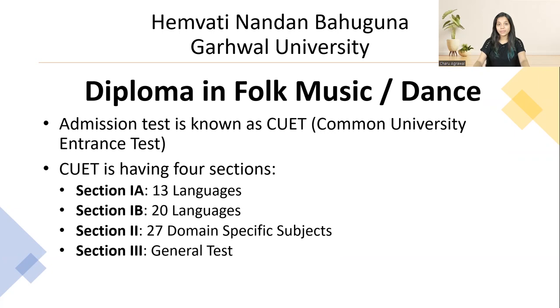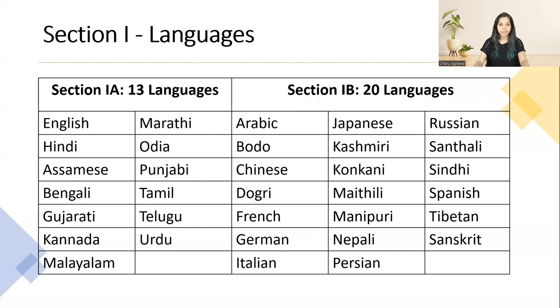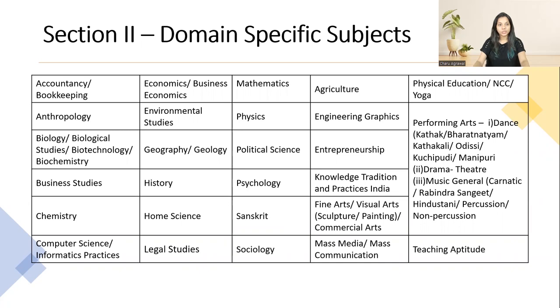Section 2 covers 27 domain-specific subjects. Section 3 is the general test. These are the languages in Section 1, these are the domain-specific subjects in Section 2, and this is the syllabus of Section 3, the general test.